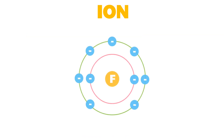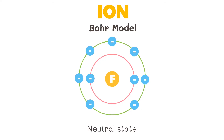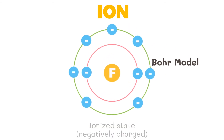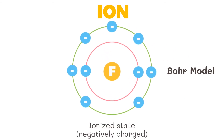To illustrate the atoms from their neutral state to their ionized state, we make use of the Bohr model of an atom. Here is fluorine in its neutral state. Fluorine has seven valence electrons and thus needs another electron to be stable. In its ionized state, fluorine will be negatively charged due to the addition of another electron. In this state, fluorine is stable — it has followed the octet rule. The size of the anion, fluorine, increased due to the repulsion among valence electrons.